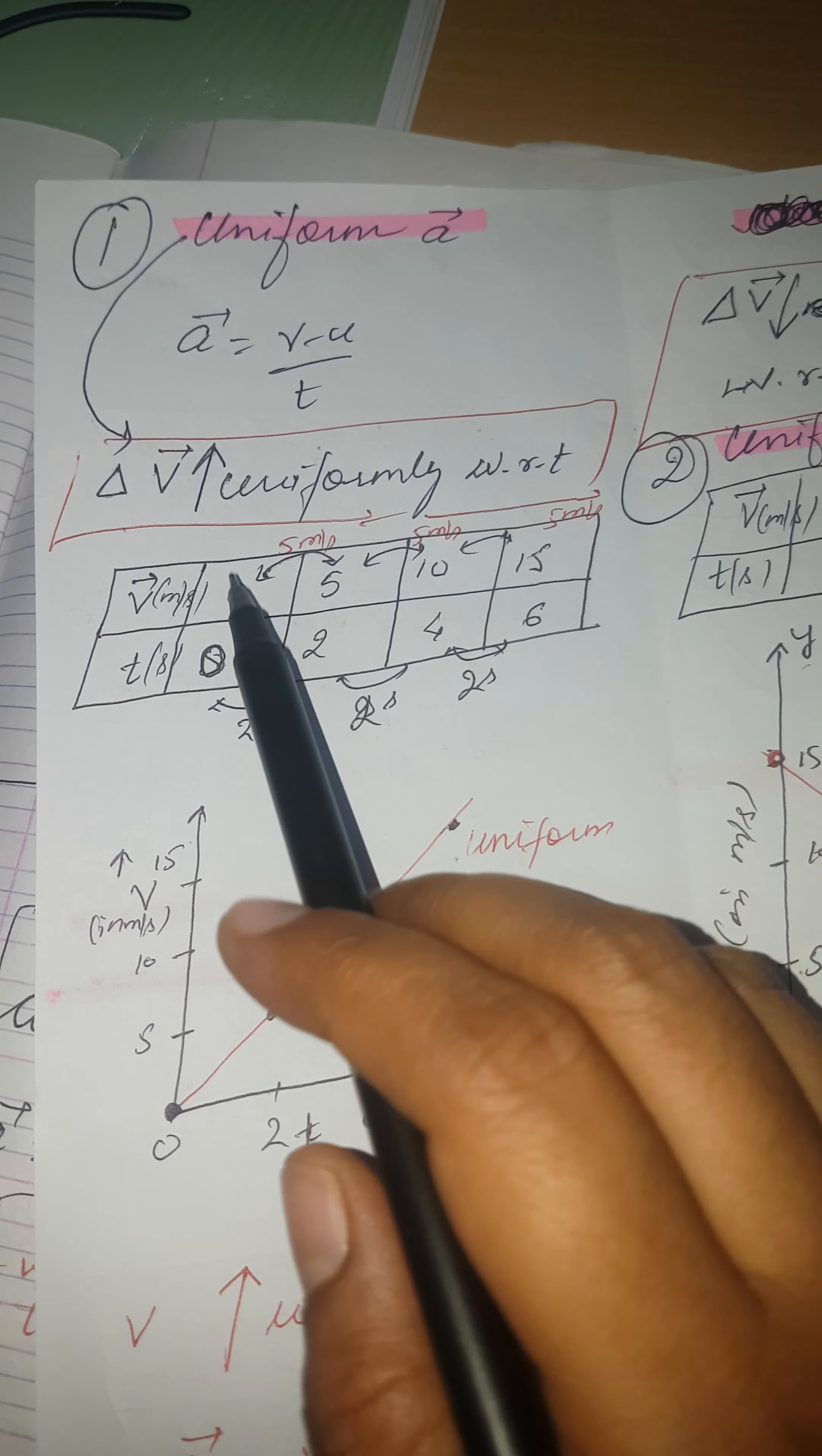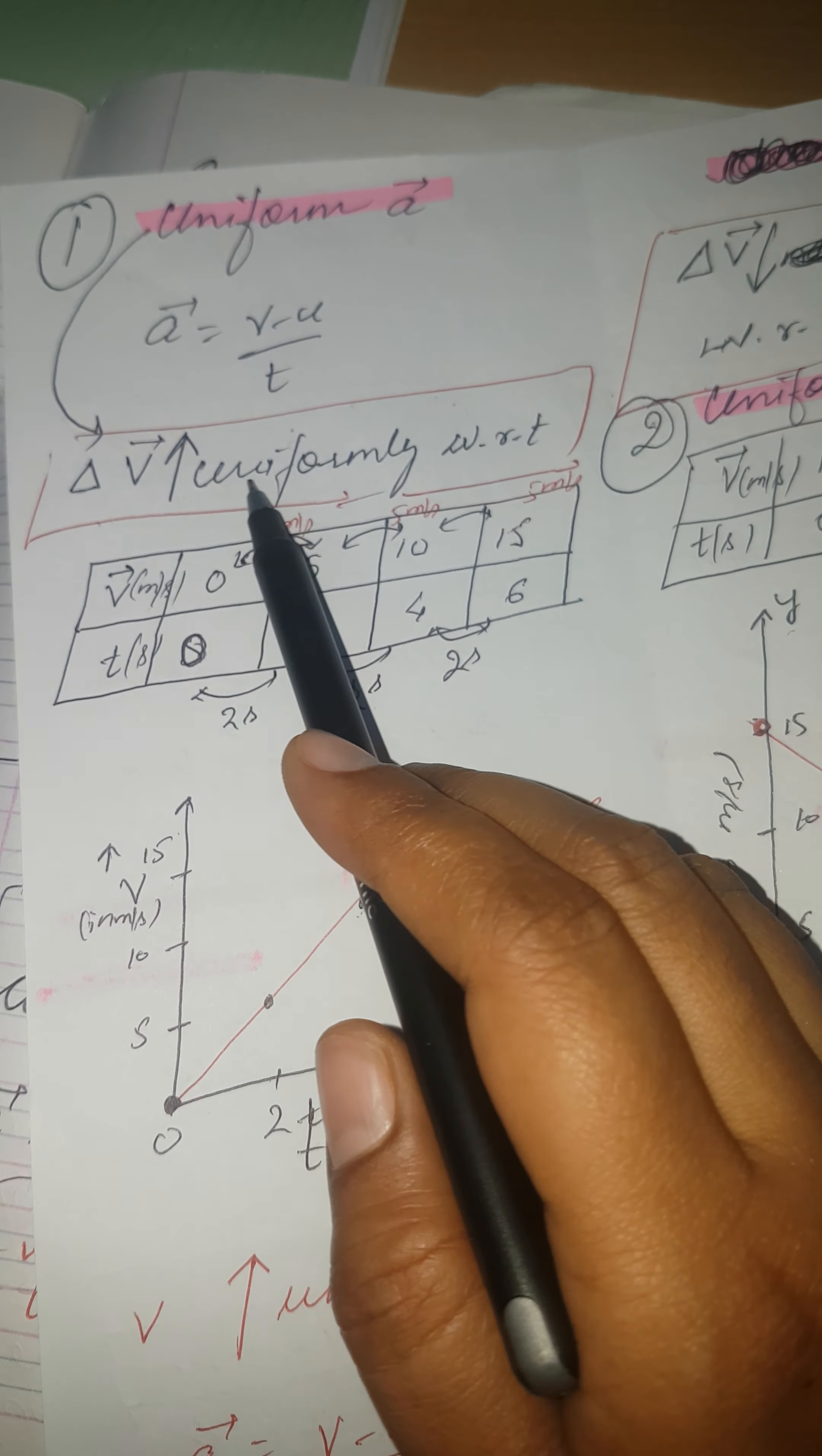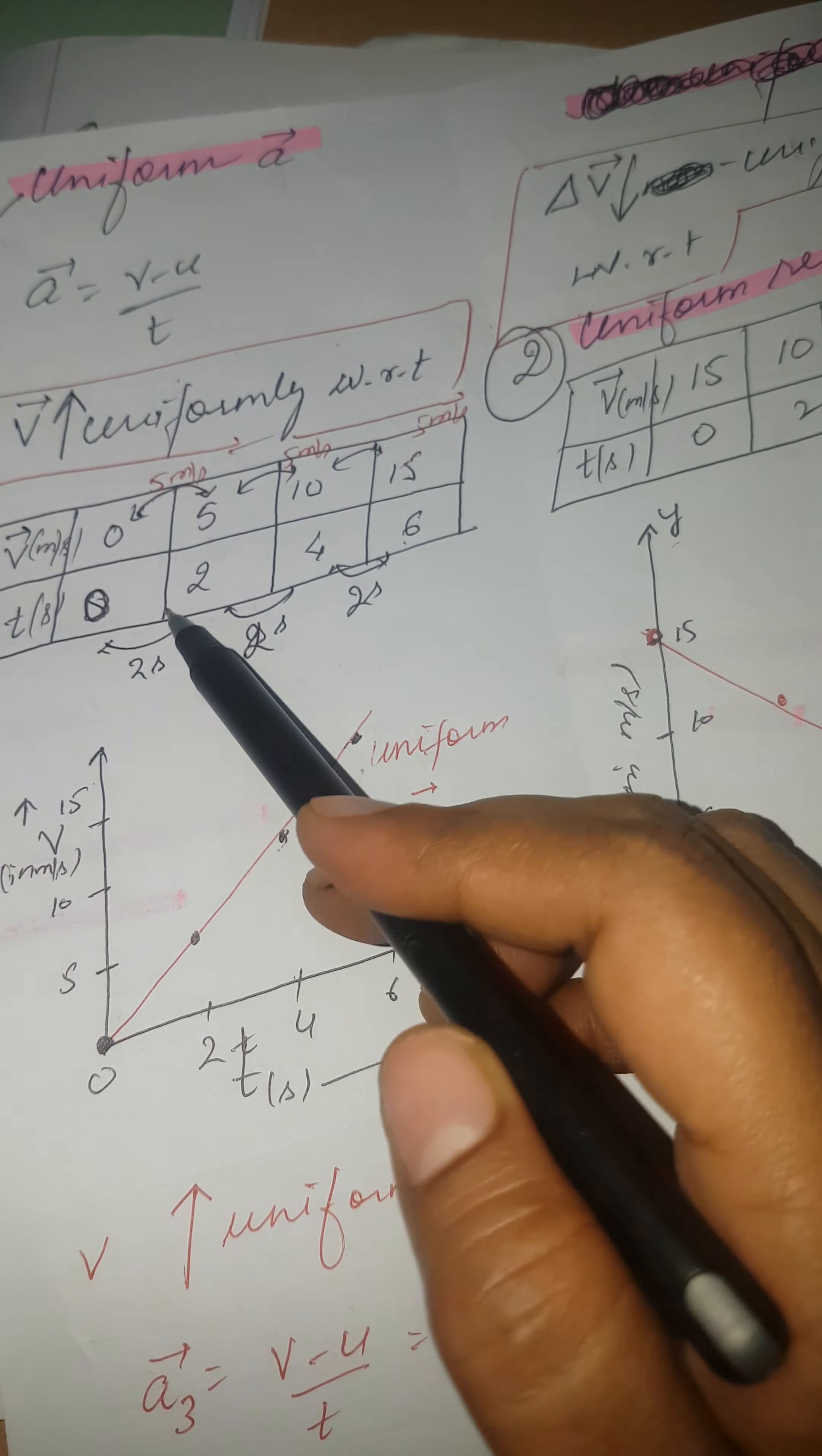Let us start with first case: uniform acceleration. Uniform acceleration means velocity is increasing but uniformly. From this reading you can easily understand we have taken 3 intervals of time, 2 seconds each having difference: 0, 2, 4, 6. These are the small intervals of time. In every 2 seconds you can clearly see that the velocity of the body is changing by 5 meter per second.